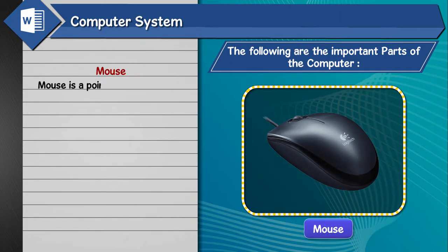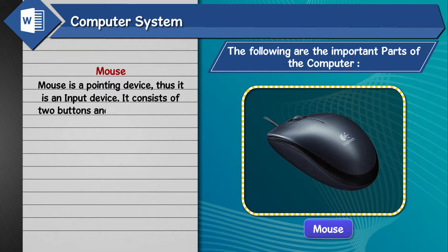Mouse. The mouse is a pointing device, thus it is an input device. It consists of two buttons and one scroll wheel. It is placed on a mouse pad for better use.